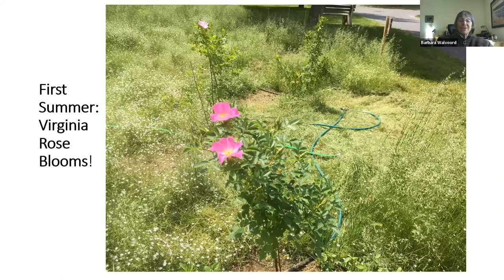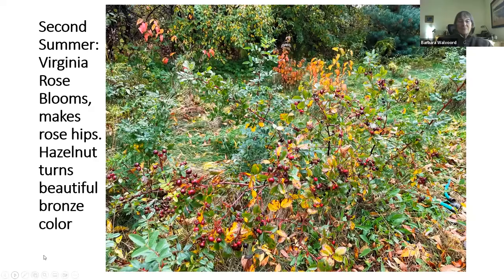The first summer, Virginia rose bloomed — bless its little heart — and you can see the soaker hose lying there and all the grasses growing up that are now unmowed. In the second summer, you can see that everything has just popped. That rose has grown enormously and was full of blooms in the spring. This is a native rose, not your traditional garden rose, and it supports lots of wildlife and makes rose hips. You can see the little red rose hips, which gives you an idea of how big this one rose has grown.